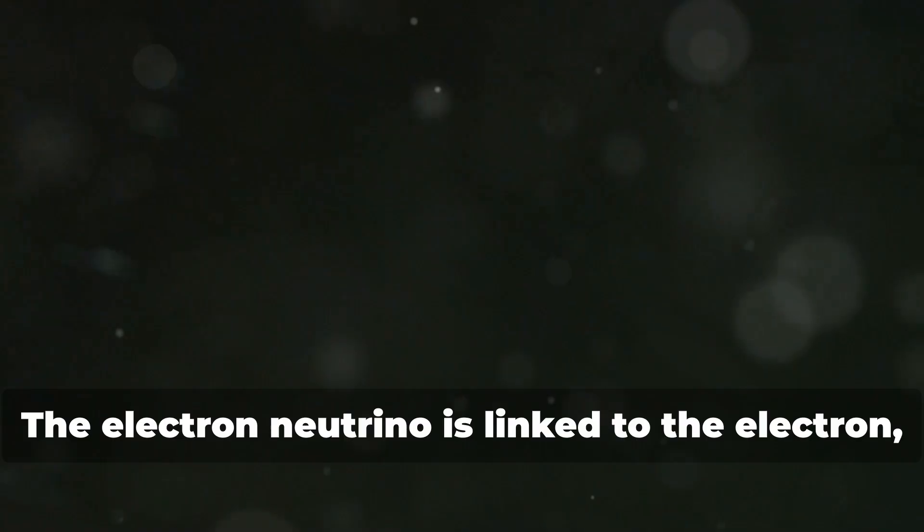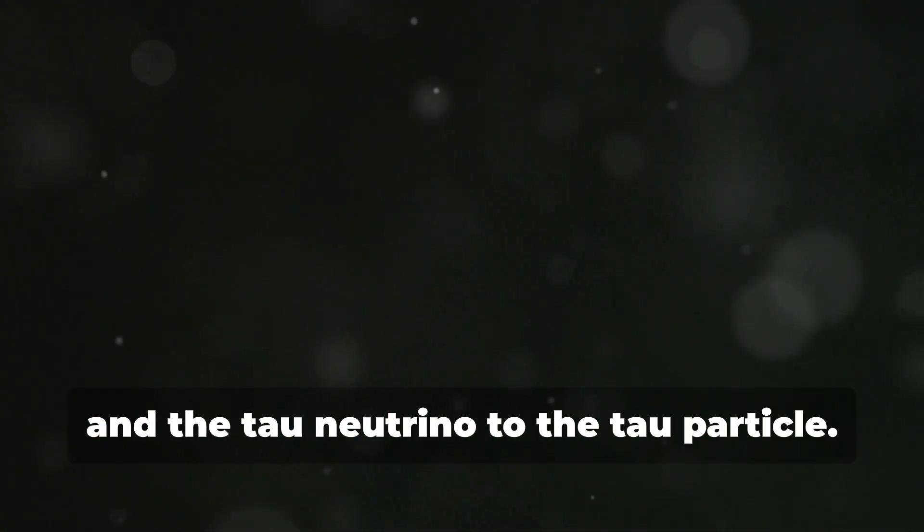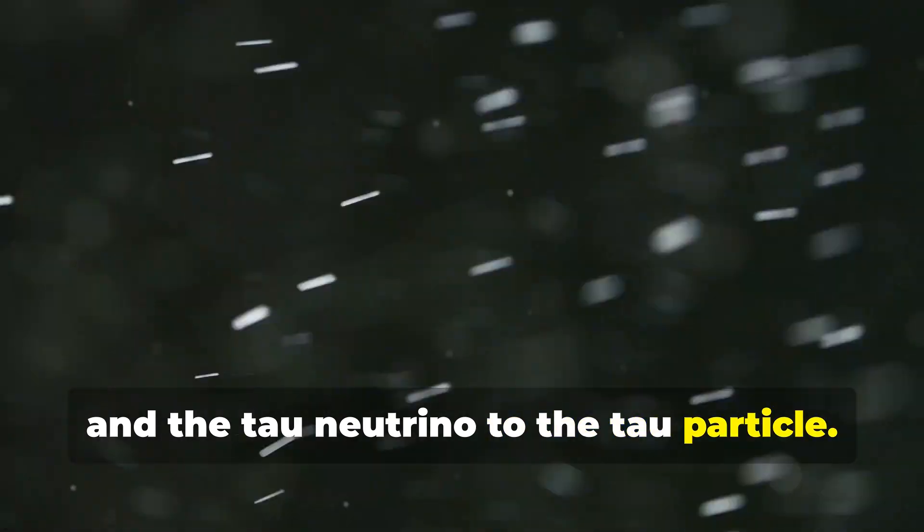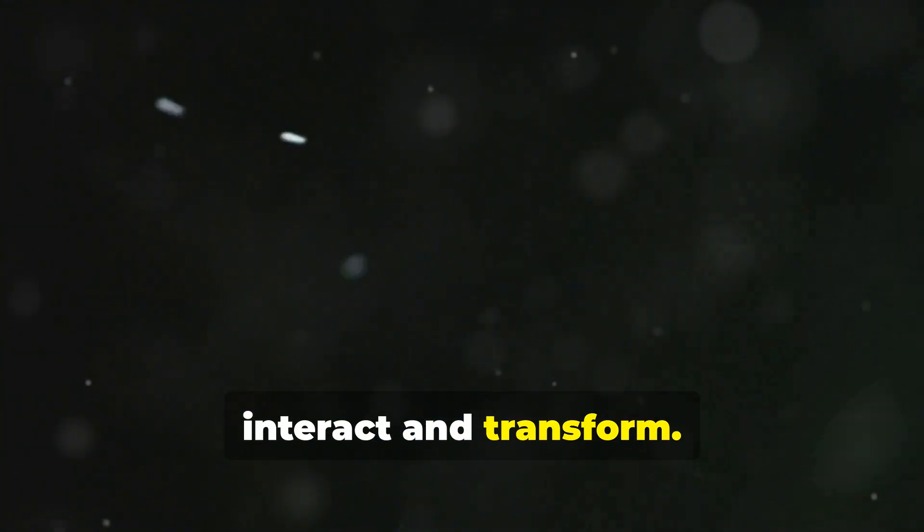The electron neutrino is linked to the electron, the muon neutrino to the muon, and the tau neutrino to the tau particle. These relationships are crucial for understanding particle physics. Just know that these different flavors play a crucial role in how neutrinos interact and transform.